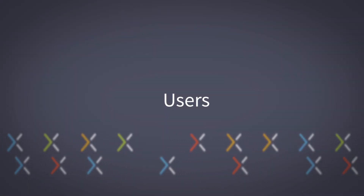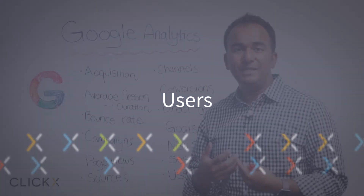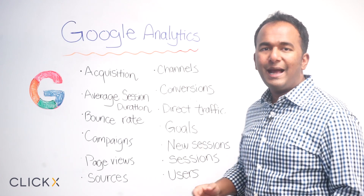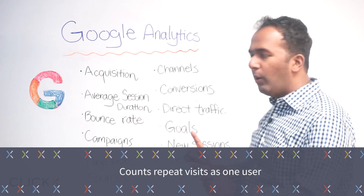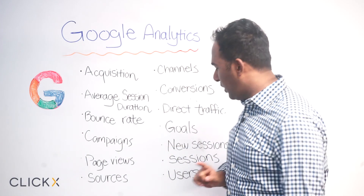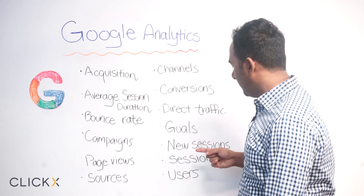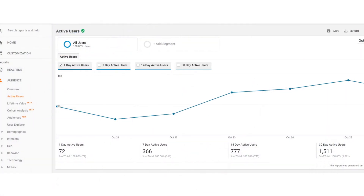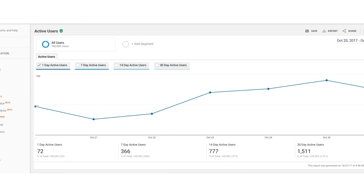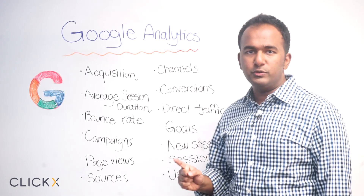Users are just people. You get to track how many people have visited your website — the total number of people. It counts repeat visits as one. So if I go to the website 50 times a day, it's all considered one user, whereas you'd have 50 sessions but only one user. As long as you didn't clear your cookies or restart your browser, it's still considered one user.